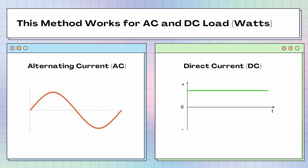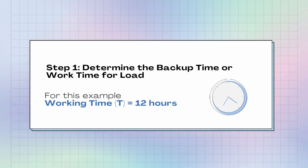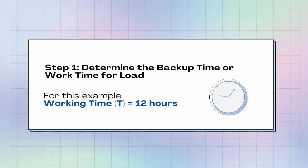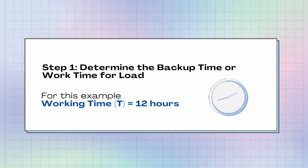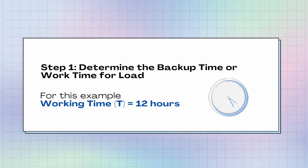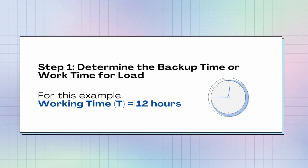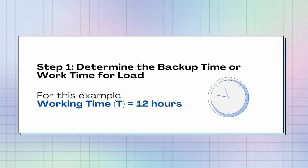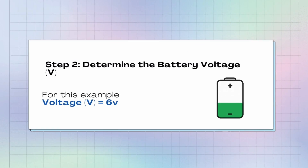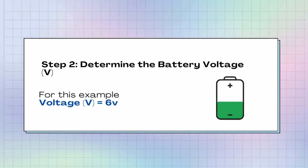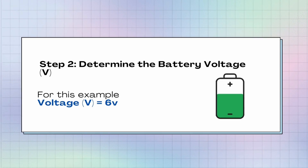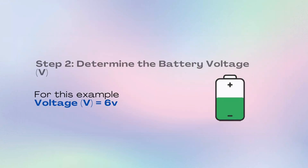Let's get into our step-by-step tutorial. First, we need to determine the backup time or the work time for load. For this example calculation, we will use 12 hours as our working time. In the second step, we will need to determine the voltage of the battery. For this example, we will use 6 volts.